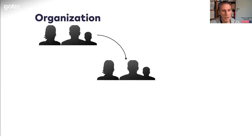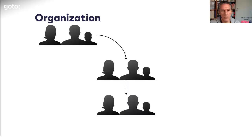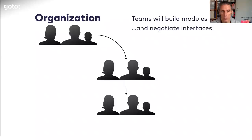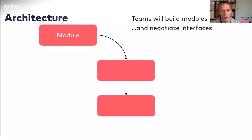Here's the organization: I have one team, another team, and a third team. If I have those teams, they will probably each build a module, because modules by definition are things that can be implemented independently from one another. A module has some interface and some internal workings; you can change the internal workings without changing the interface. You negotiate the interface but not the internals, keeping communication between teams low — and once you set up this organization you will get these modules. That's a problem.